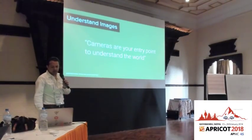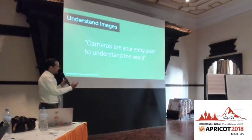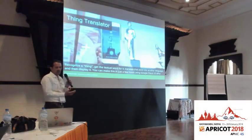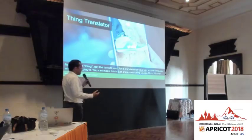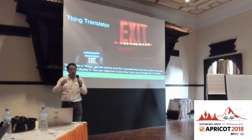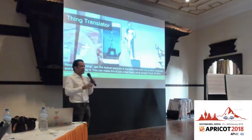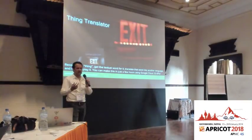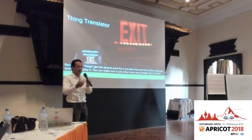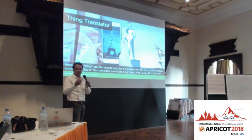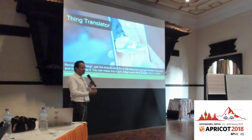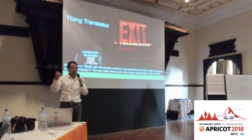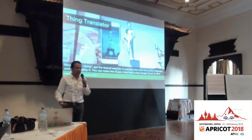Understanding images — cameras are our entry point to understanding the world, as we saw with Google Lens. Others have been making things like the Thing Translator: it merges two ML systems — one recognizes objects, the other is translation. Once we recognize an object and know the word for it, we pass it through Google Translate and get it in the language of your choice. This is a useful educational tool, and with the APIs I'll show you later, you can make this in a couple of hours — what previously would have taken months or years.